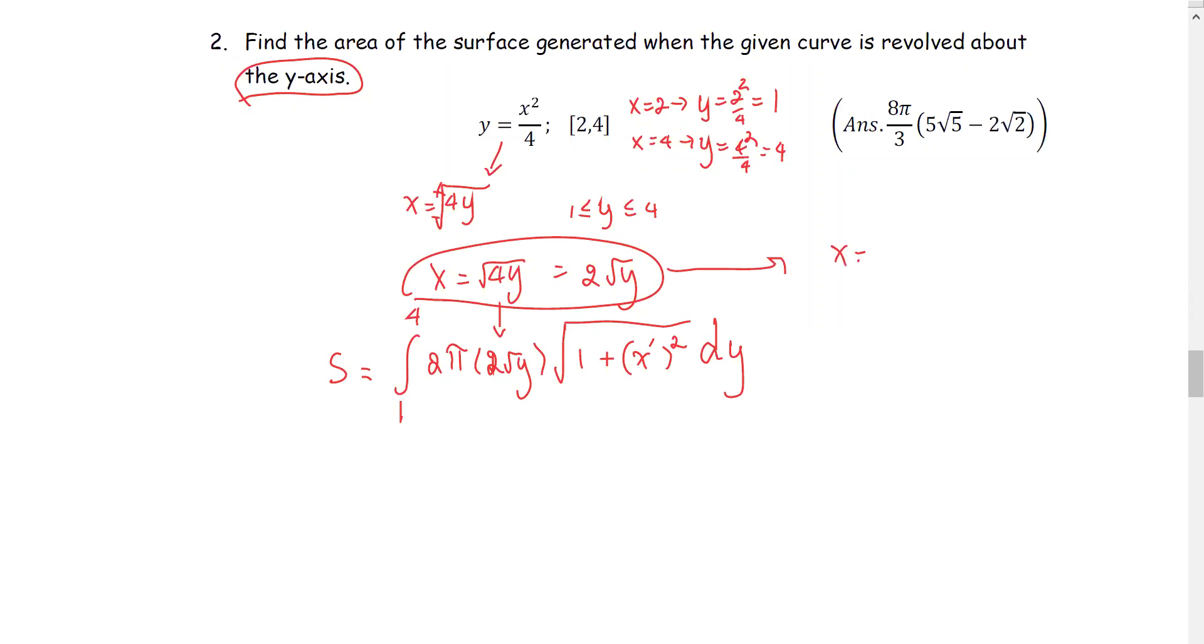For x equals 2 square root y, or 2 times y to the 1 half, the x prime is 2 times 1 half y to the negative 1 half, or 1 over square root y. Finding the square of x prime gives us 1 over y.